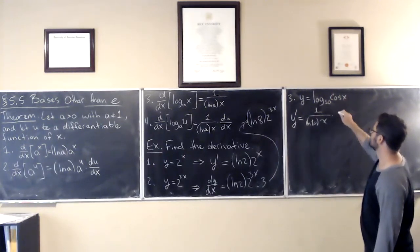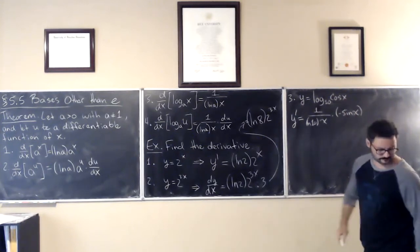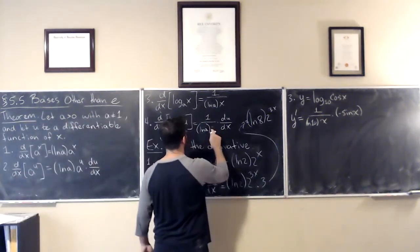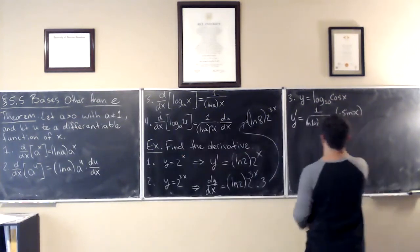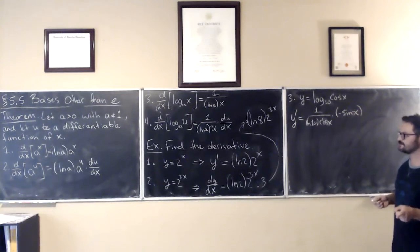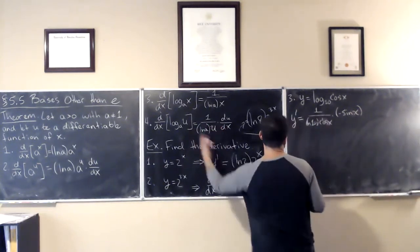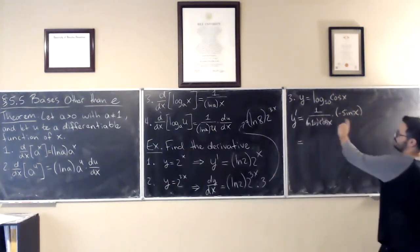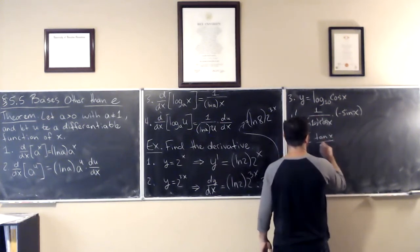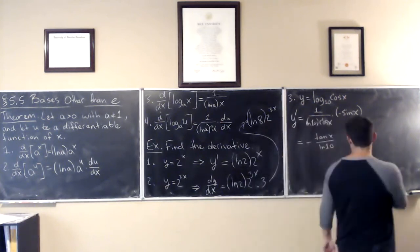So du dx, the derivative of cosine is negative sine. All together, negative sine over cosine, we have tangent. So this would be negative tangent x all over natural log of 10, whatever that becomes, and that'd be it.